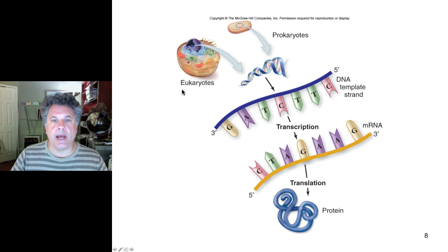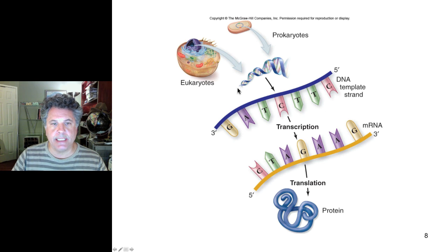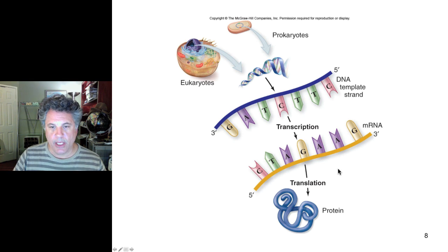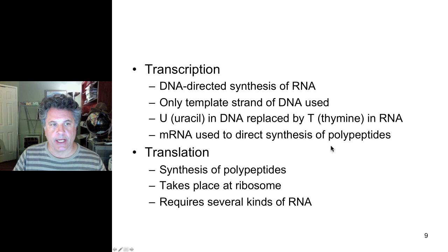We're going to pick up now with the process of decoding genetic information through transcribing DNA into messenger RNA, or mRNA, and then the translation of that mRNA into protein. We'll study these processes in some detail, but let's first establish the nature of the genetic code.